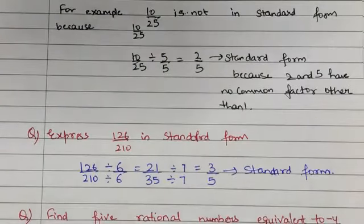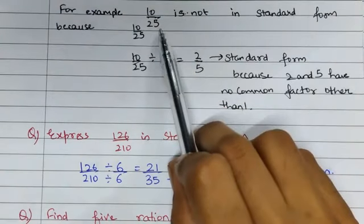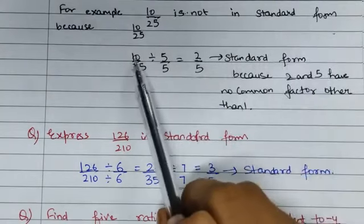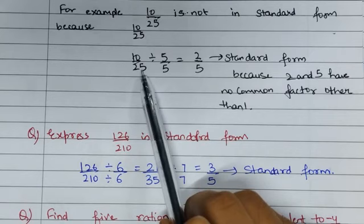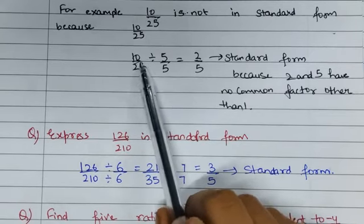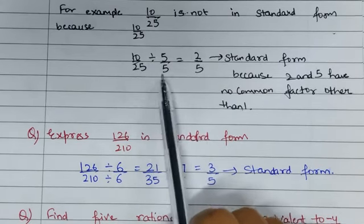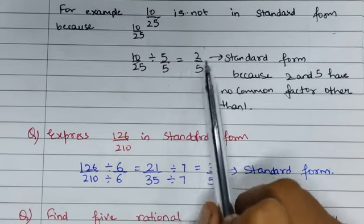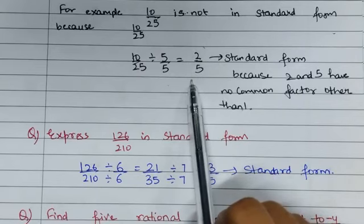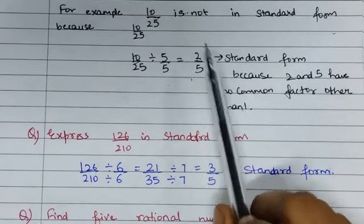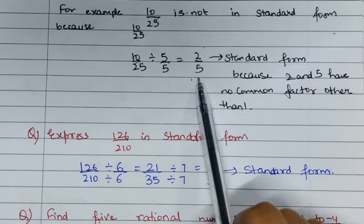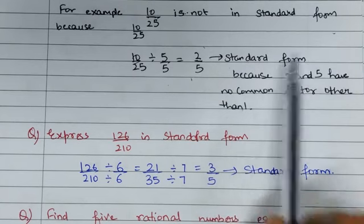Now let us do an example. We have 10 upon 25. This is not in standard form because both have a common factor of 5. 10 divided by 5 is 2, and 25 divided by 5 is 5. We get 2 by 5, which has no common factor other than 1, so 2 upon 5 is in standard form.